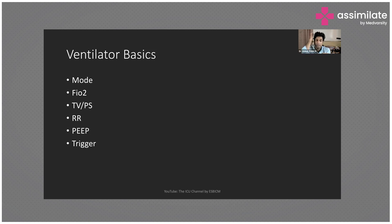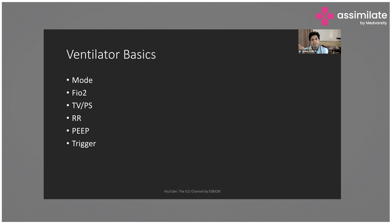You have intubated a patient and now need to connect them to the ventilator — so which mode do you start with? Broadly, we can divide modes into three types: one in which the ventilator has taken control over the patient's respiration and provides all the breaths; a second in which some breaths are provided by the ventilator and some are taken by the patient; and a third in which all breaths are triggered by the patient and the ventilator just fulfills them.